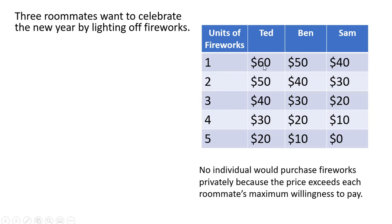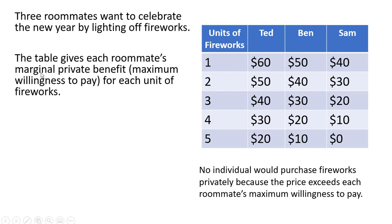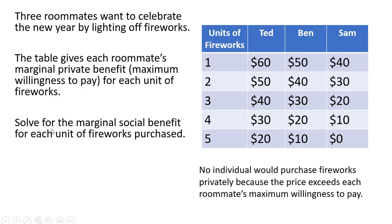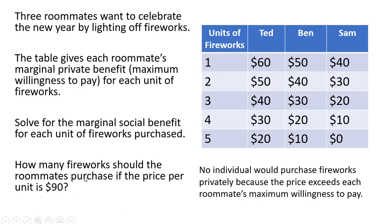Ted is willing to pay at most $60 for the first unit, Ben $50, Sam $40, and so on. We want to solve for the marginal social benefit for each unit of fireworks purchased, and also how many fireworks the roommates should purchase if the price per unit is $90.